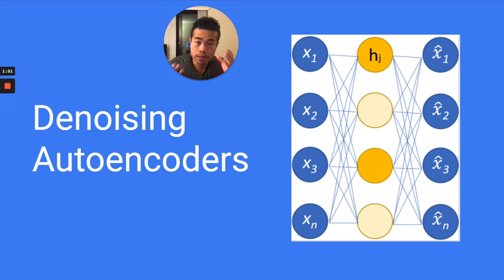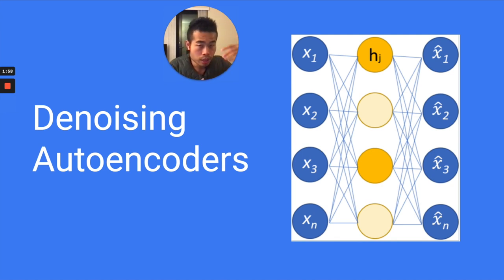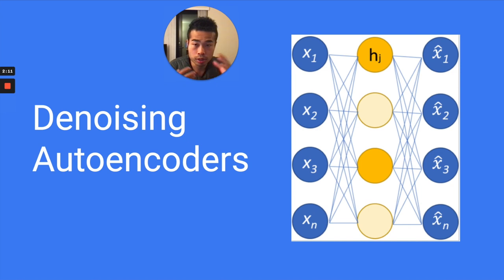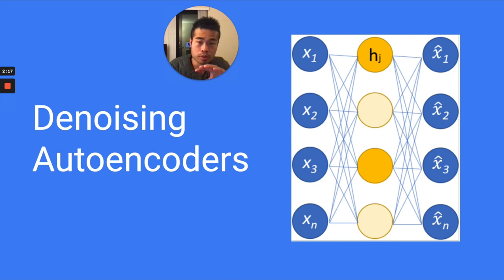An autoencoder is basically: you give the input to your model — your inputs x1, x2, x3, xn — and your model needs to predict the output, and the output should be exactly the same as your input. But the problem is, if you use a neural network model, which is powerful, it's very easy to overfit. The model will just learn the identity function — just directly copy the input to the output.